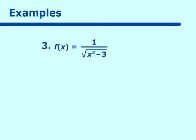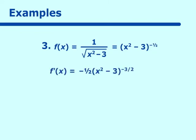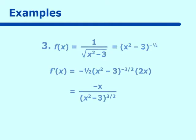Let's try another example. f of x equals 1 over the square root of x squared minus 3. The outside is to the negative one-half power, and the inside is x squared minus 3. For f prime of x, we do the outside first: negative one-half times (x squared minus 3) to the negative three-halves. Then we go inside and take the derivative, which is 2x, since the derivative of 3 is 0. Cleaning this up, we get negative x times (x squared minus 3) to the negative three-halves.